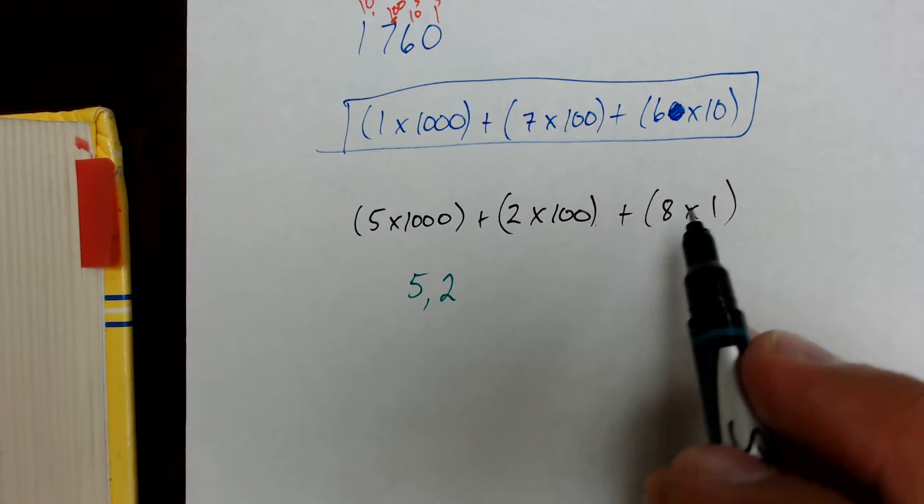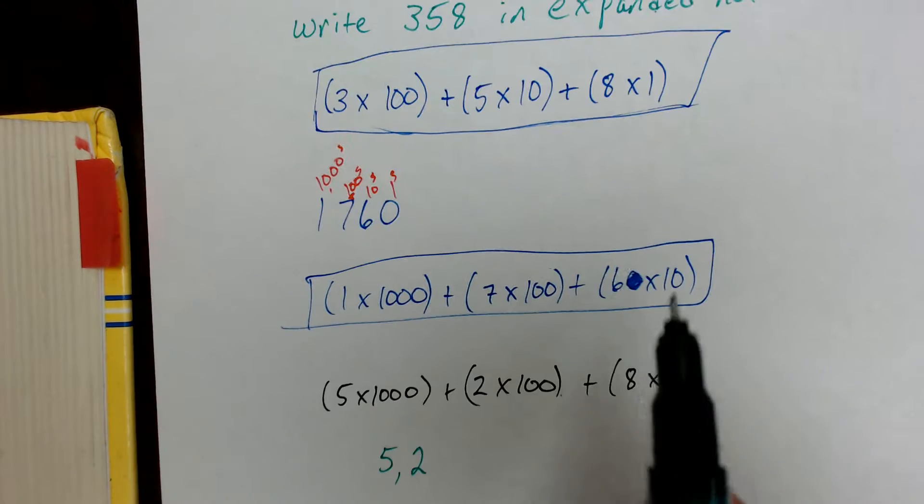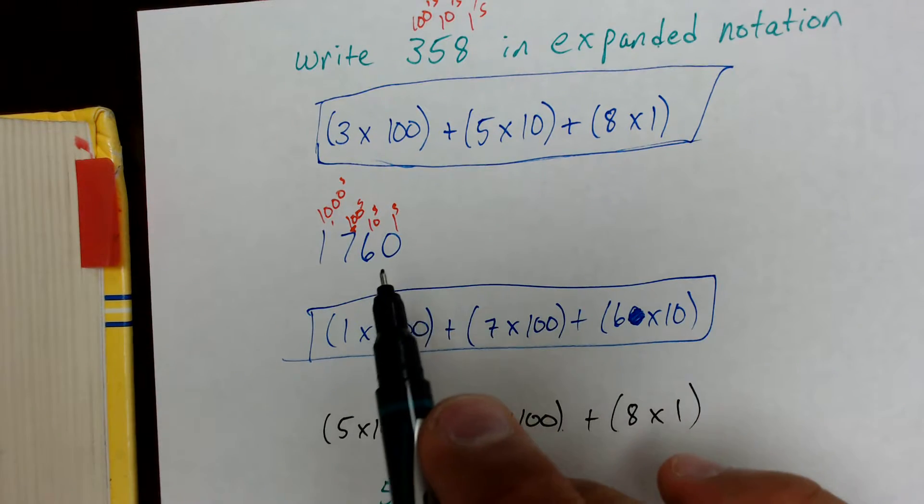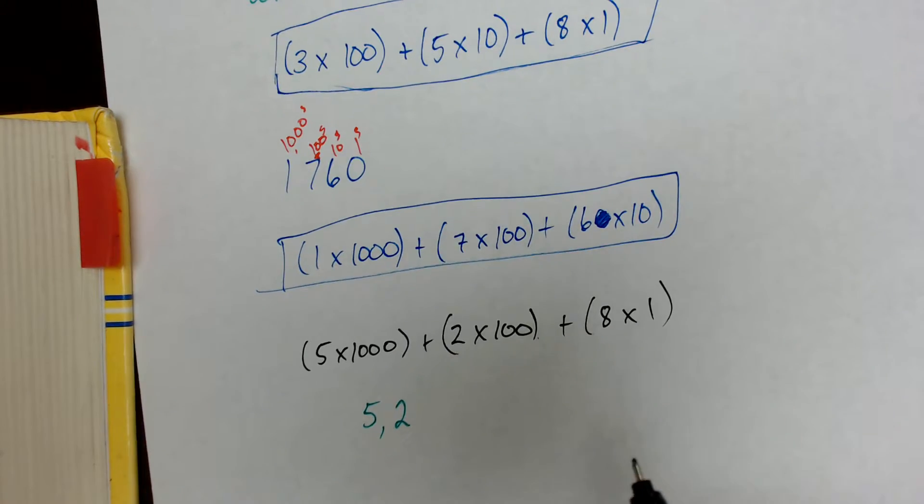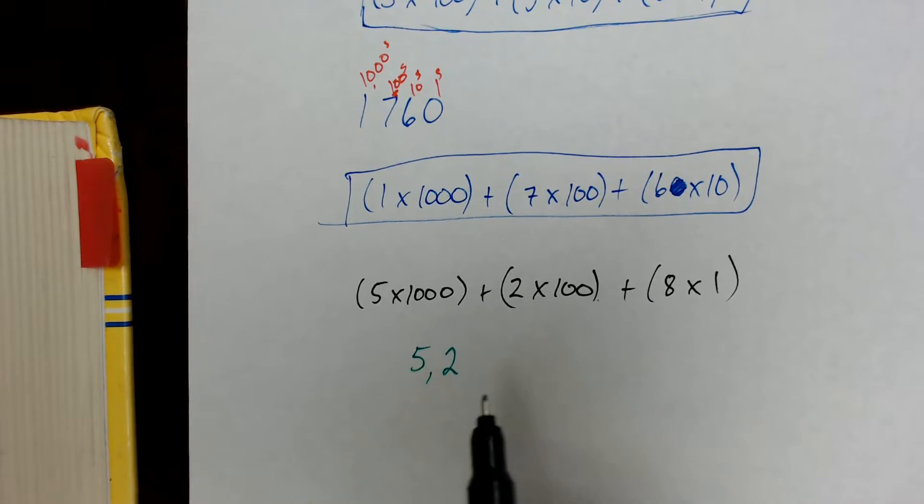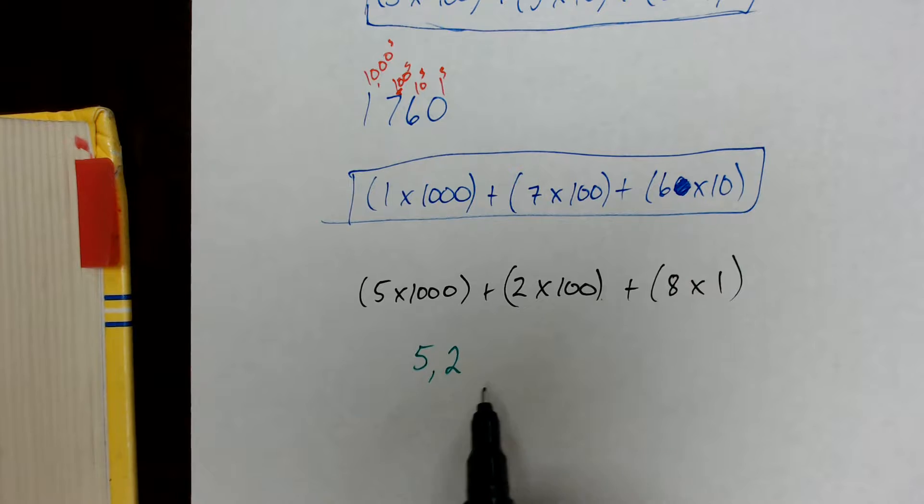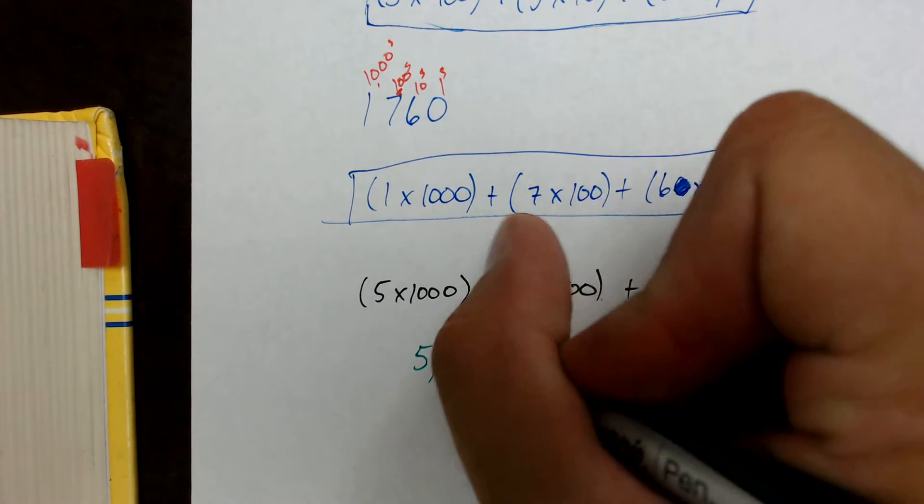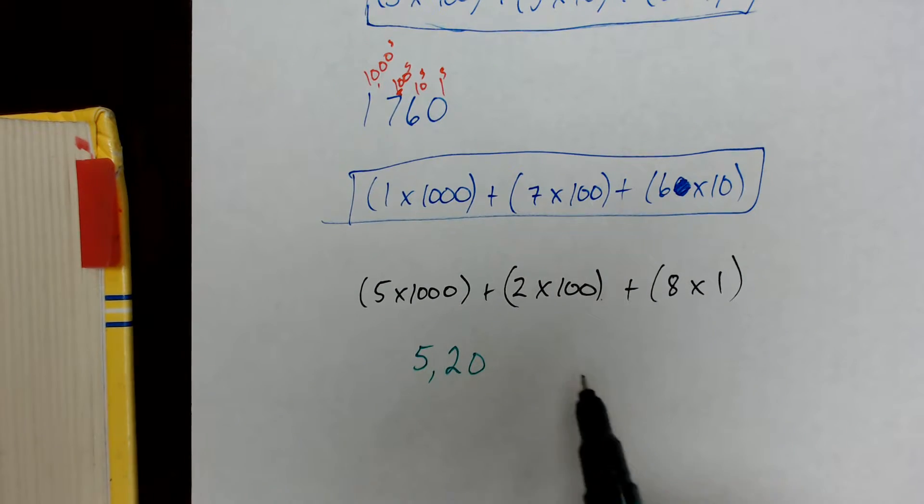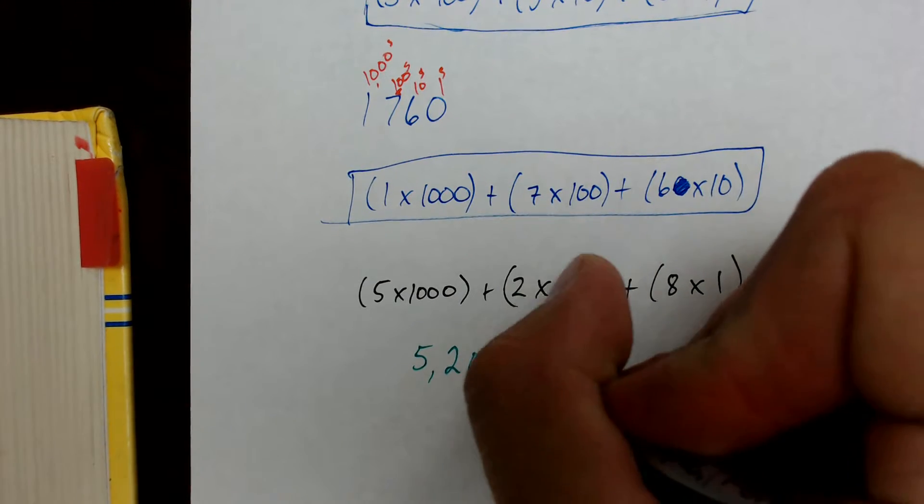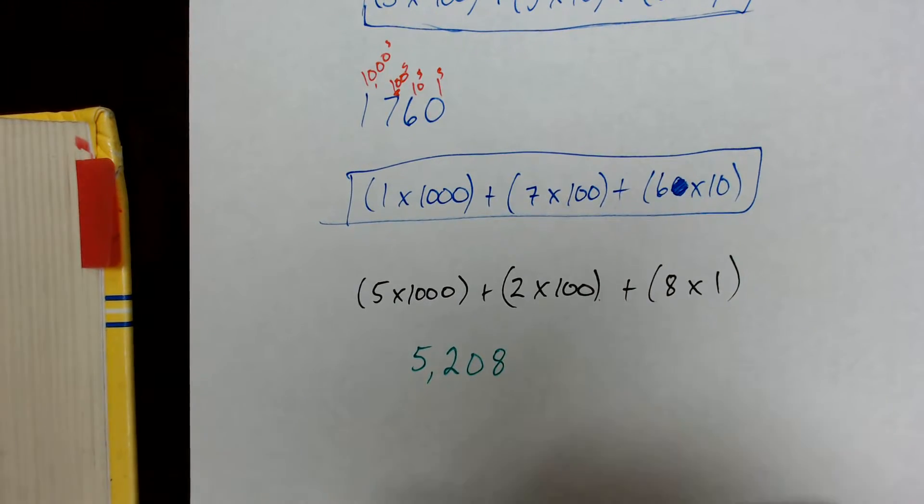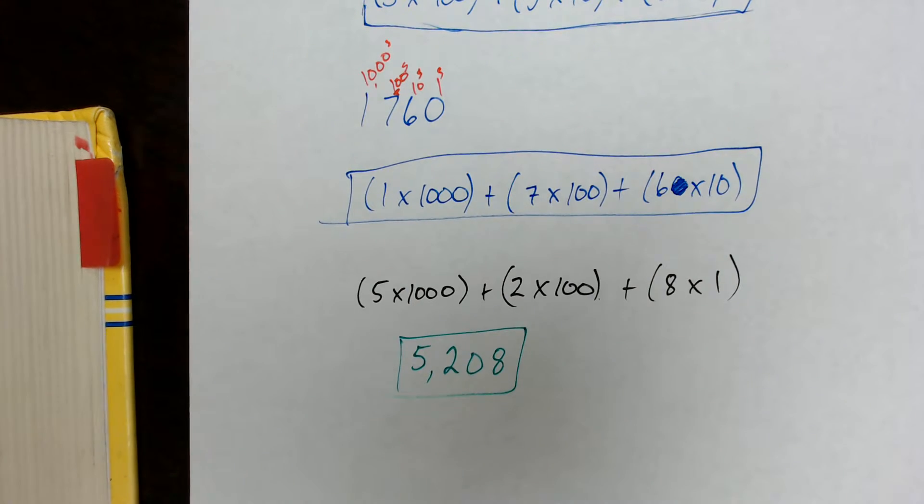Anybody notice something missing here? There's no tens place. Now remember what I said on this one. If there is a zero in that place value, we don't write it in the expanded notation. So since 10 is missing, that means the number in the tens place is obviously the number zero. Then lastly, we do 8 times 1, which gives us a value of 8 in the ones place. And that would be the final answer in standard notation.